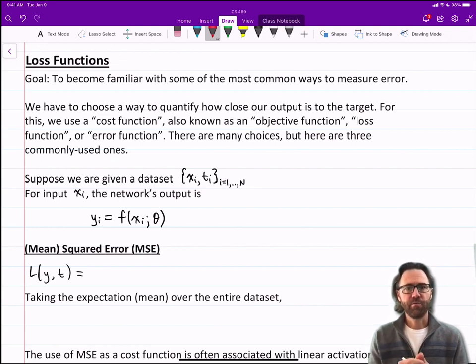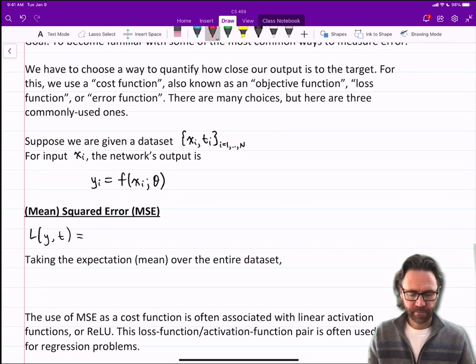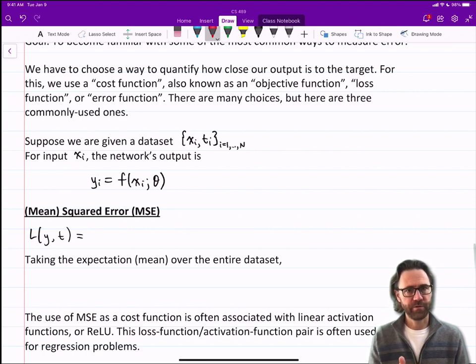For context, let's start with a dataset with pairs of inputs and output targets, (xi, ti), where i goes from 1 to N. For the input xi, the network's output is yi. We can represent the operation of the network using this function notation: F of xi, given the sets of weights and biases, the parameters of the network in theta.